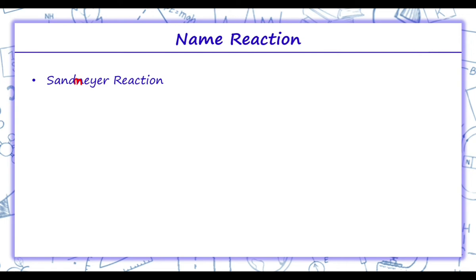As we know, Cl, Br and CN are nucleophiles and they can be easily introduced in the benzene ring of benzene diazonium salt in the presence of CuI ion. This is called Sandmeyer reaction.